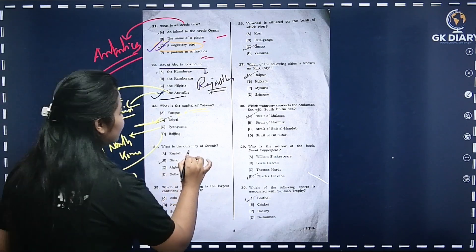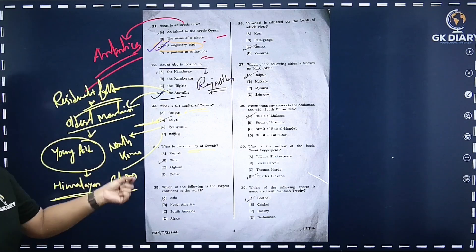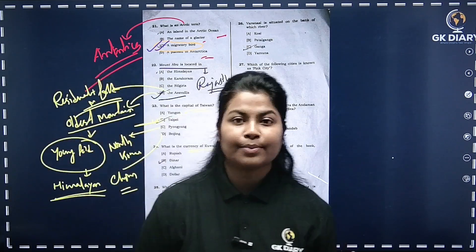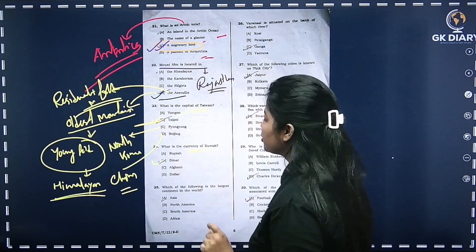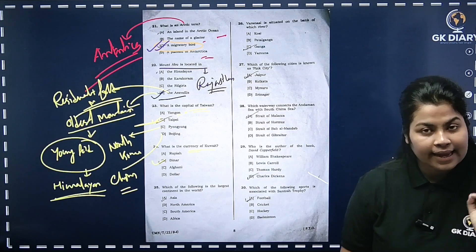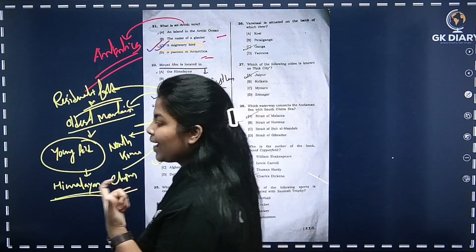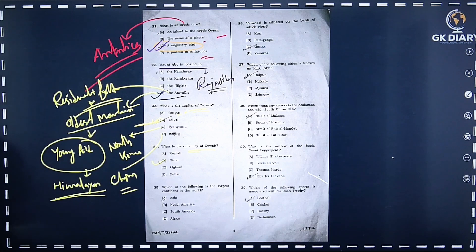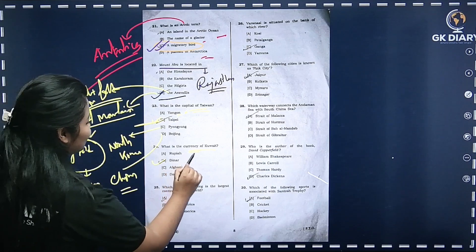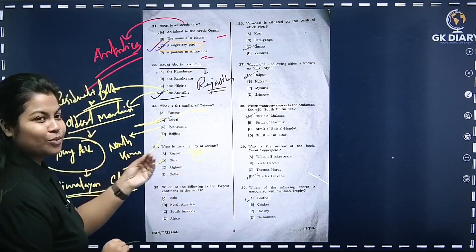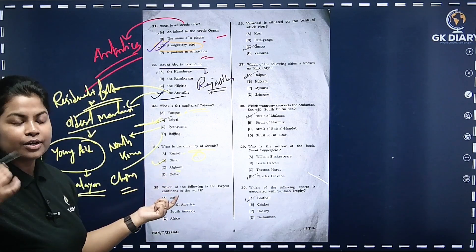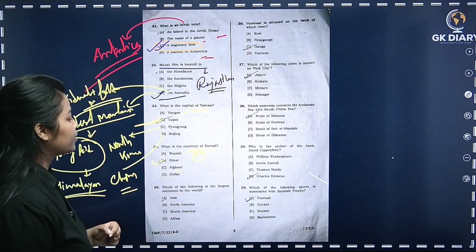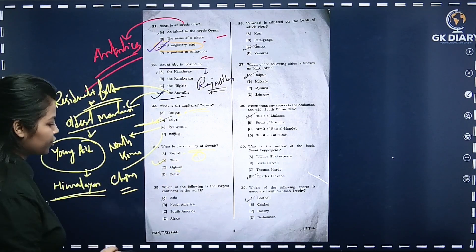What is the currency of Kuwait? The correct option is Dinar — option A. Rupiah is not correct. The currency of Kuwait is the Dinar. You can use this information for DHS or DME exams.